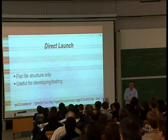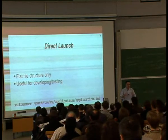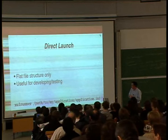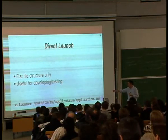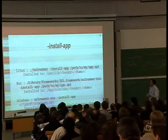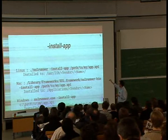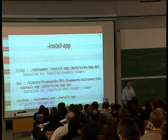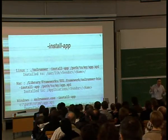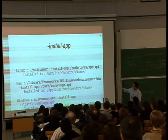Direct launch is from a flat file structure — no JAR files, just raw directories on disk. It's useful for developing and testing but probably not for production. It's better to use JAR files for larger applications. The command is 'xulrunner' pointing to the application.ini file. For the install-app command: run 'xulrunner --install-app' and the path to your XPI file. Applications are typically distributed as XPI files, like Firefox extensions, but can also be zip files — any format XULRunner recognizes.